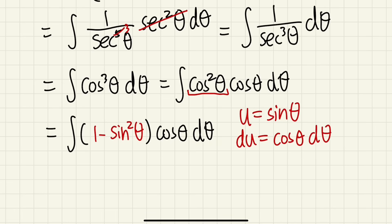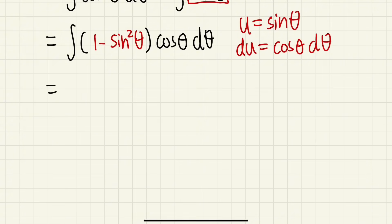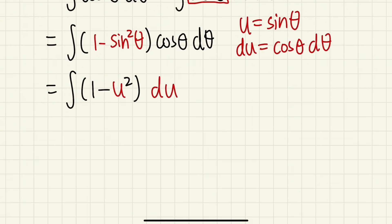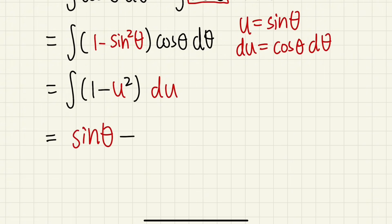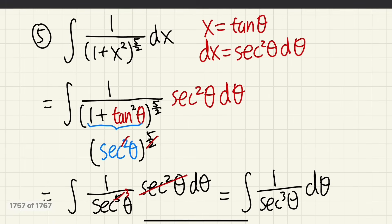Now the integral becomes ∫(1 − u²) du. Integrating: we get u minus 1/3 u³, where u = sin(θ). So the result is sin(θ) − 1/3 sin³(θ). But we are still in the theta world, so we need to go back to the x world.